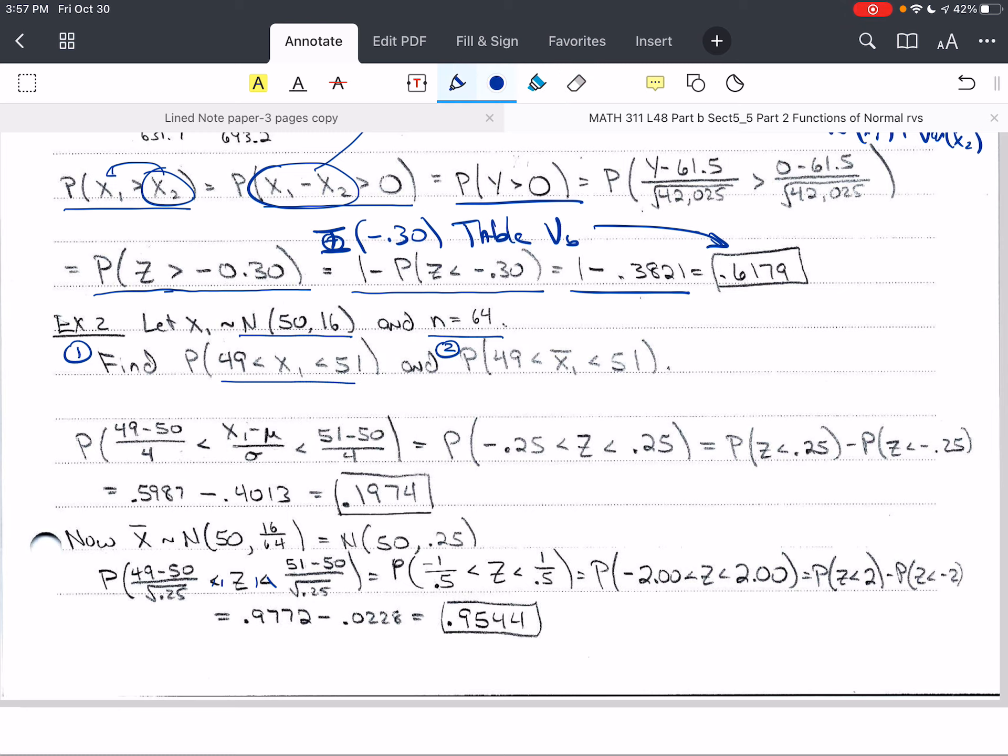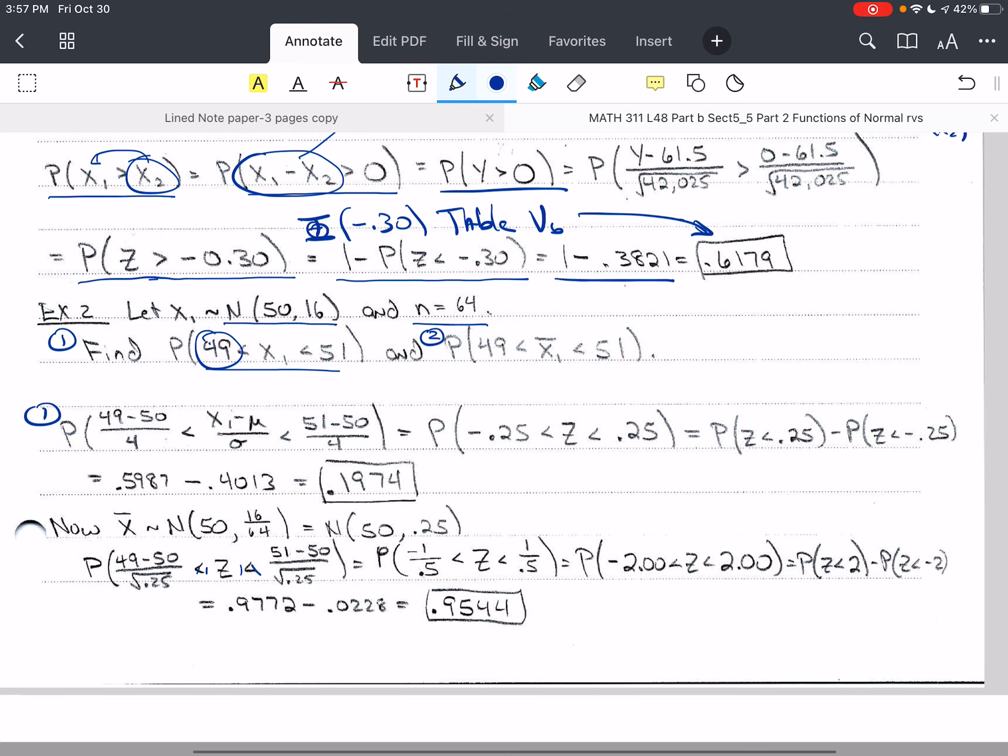So we take for the first, we take 49 and 51 and x₁, and we subtract the mean, and the mean here is 50, and we divide by the standard deviation, which is 4. And so we do that to all three portions of the inequality to keep it the same, to not change it.